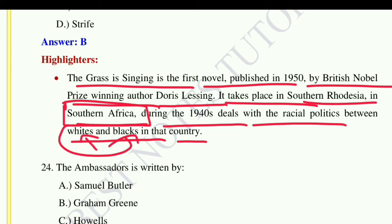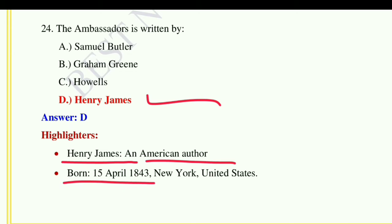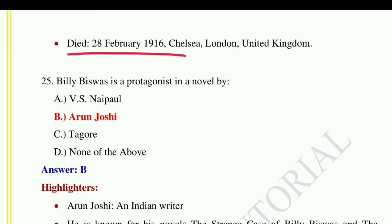Question number twenty-four: 'The Ambassadors' is written by — option A: Samuel Butler, option B: Graham Greene, option C: Howells, option D: Henry James. The correct answer is option D, Henry James. Henry James was an American author born on 15th April 1843 in New York, United States, and died on 28th February 1916 in Chelsea, London, United Kingdom.